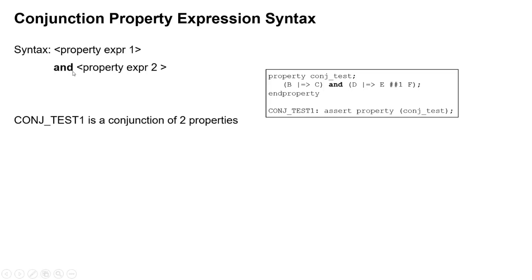A conjunction is an AND, and in this case each operand is a property expression itself. So what we've got here is an example using the AND operator.